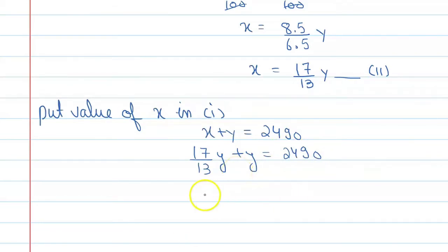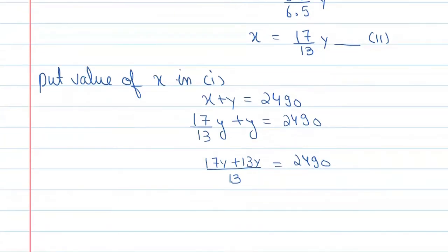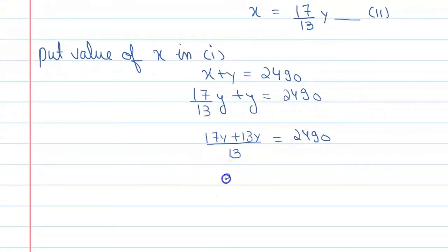Solving further, then you will get (17y plus 13y) upon 13 equals 2490, which gives 30y equals 2490 times 13. So y is equal to 2490 times 13 upon 30, which gives y equals 1079. This is the value.